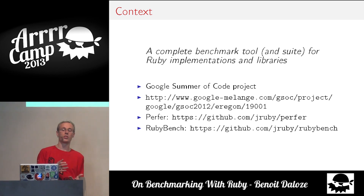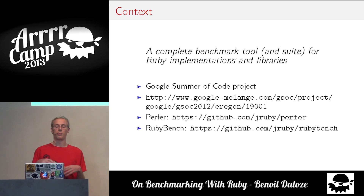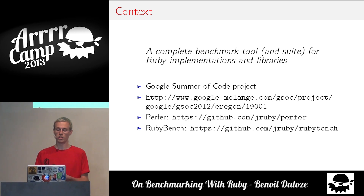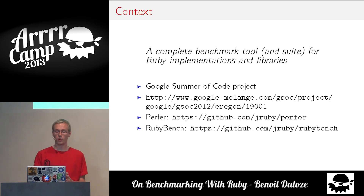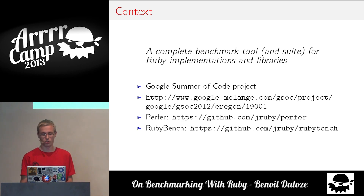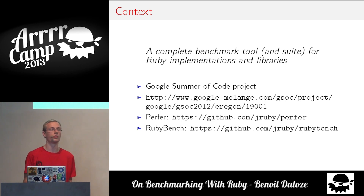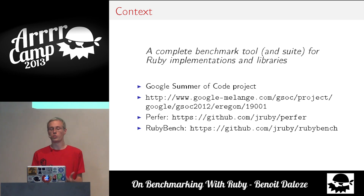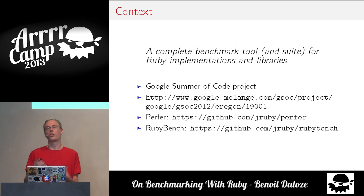A little context: I made this tool last year during Google Summer of Code, and the proposal was named 'A complete benchmark tool and suite for Ruby implementations and libraries.' Perfer is the tool and Rubybench is the suite. It's a very ambitious project, because having a real good suite for every implementation is very hard, but we already have some quite interesting results.